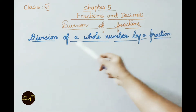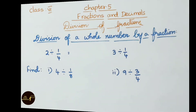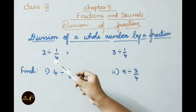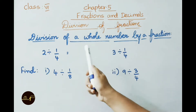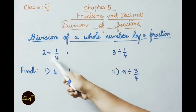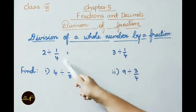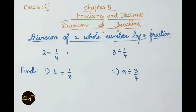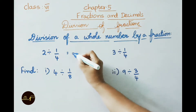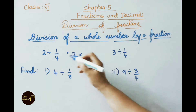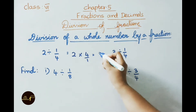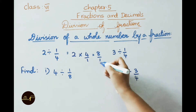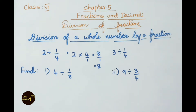Let us see today division of a whole number by a fraction first. See the first sum: 2 divided by 1/4. While doing division of a fraction, first we have to change the division symbol to multiplication and write the second fraction as its reciprocal. So 2 × 4/1. Multiply numerators: 2 × 4 = 8/1. That is 8 is the answer.